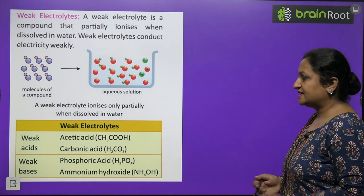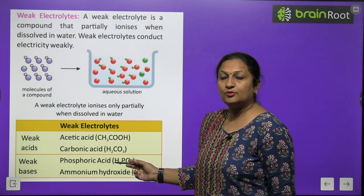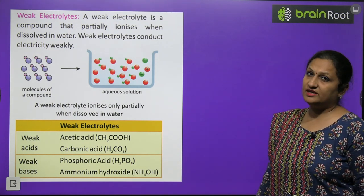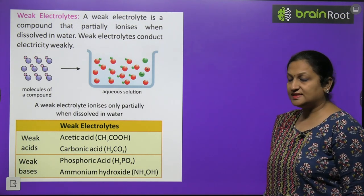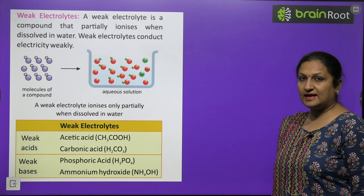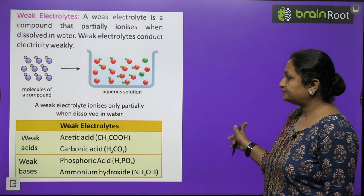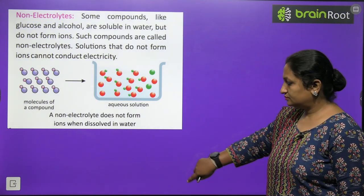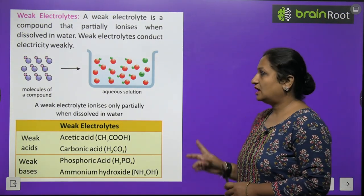Weak acids such as acetic acid and carbonic acid fall into the weak electrolyte category. Weak bases such as phosphoric acid and ammonium hydroxide are also weak electrolytes.